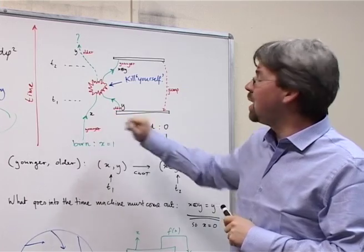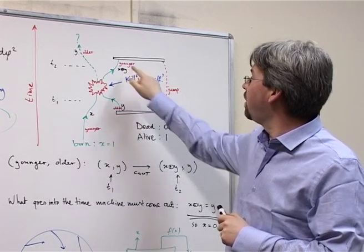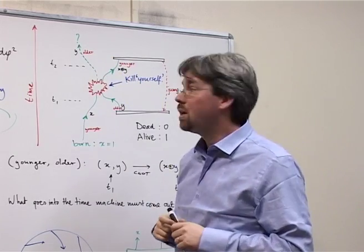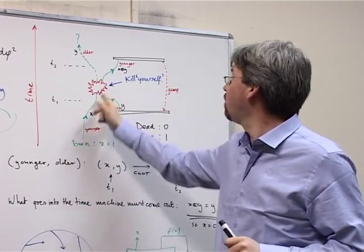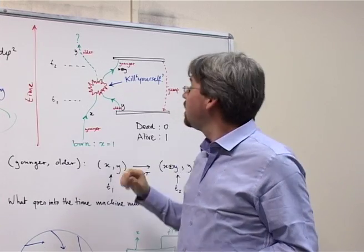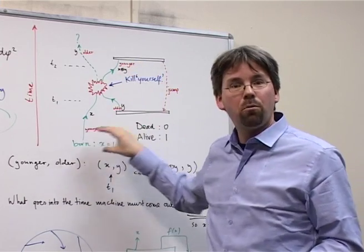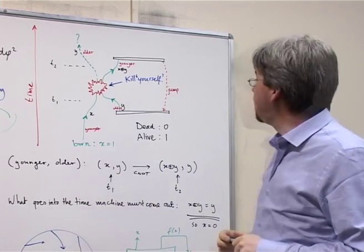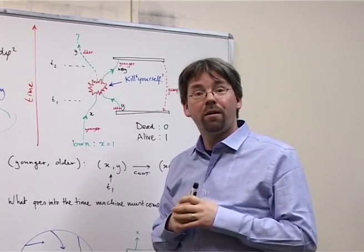So, when you allow superpositions of 0 and 1 for these bit values in quantum mechanics, it turns out you can be any state of dead and alive when you go in. And there is a resolution for the time travel paradox. So, the time machine does not impose any restrictions on the world before it came into existence. That is a very important point. And how does quantum mechanics solve this time travel paradox?